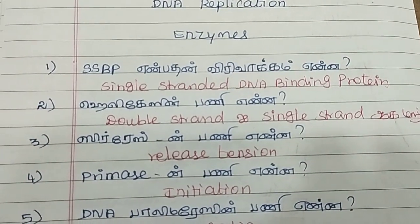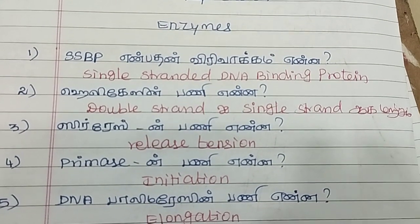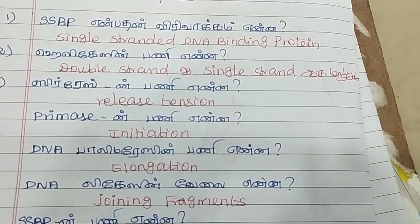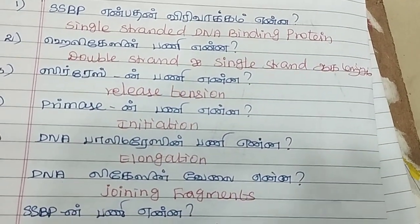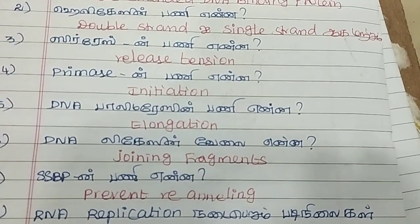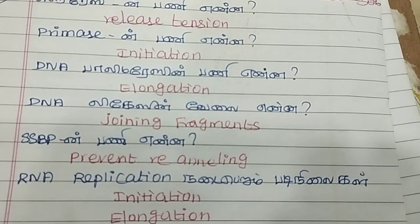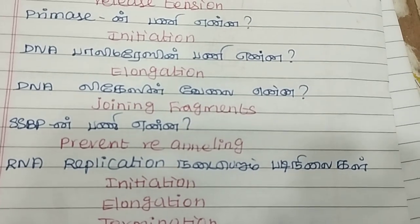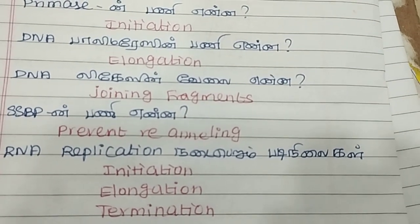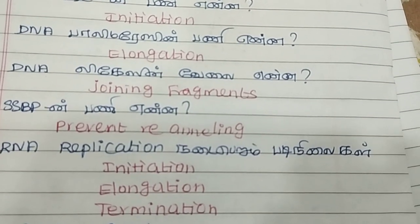DNA replication enzymes: SSBP (Single-Stranded DNA Binding Protein) — its function is to prevent re-annealing. Helicase — its function is to unwind double-stranded to single-stranded DNA and release tension. Primase — its function is initiation. DNA polymerase — its function is elongation. DNA ligase — its function is joining the fragments.